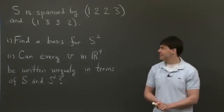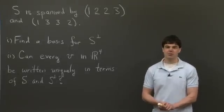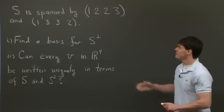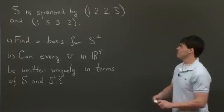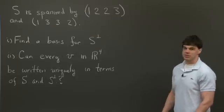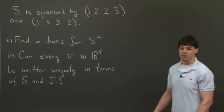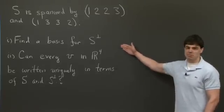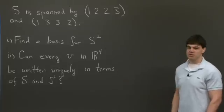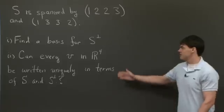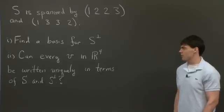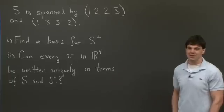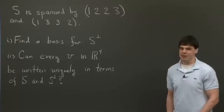Hi, everyone. I'm Dave. Now today, I'd like to tackle a problem in orthogonal subspaces. So the problem we'd like to tackle, given a subspace S, and suppose S is spanned by two vectors, (1, 2, 2, 3) and (1, 3, 3, 2), we have a question here, which is, to find a basis for S perp. S perp is another subspace which is orthogonal to S. And then secondly, can every vector in R4 be uniquely written in terms of S and S perp? So I'll let you think about this for now, and I'll come back in a minute.